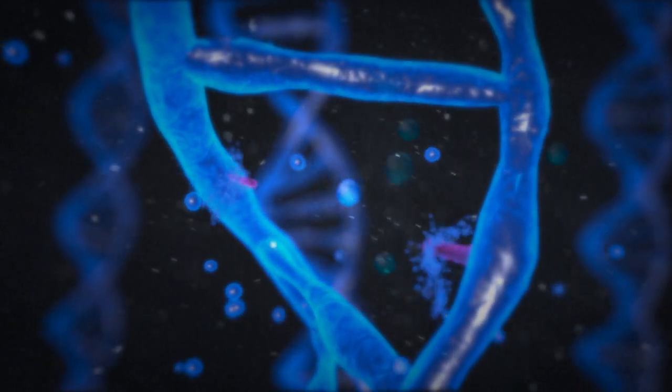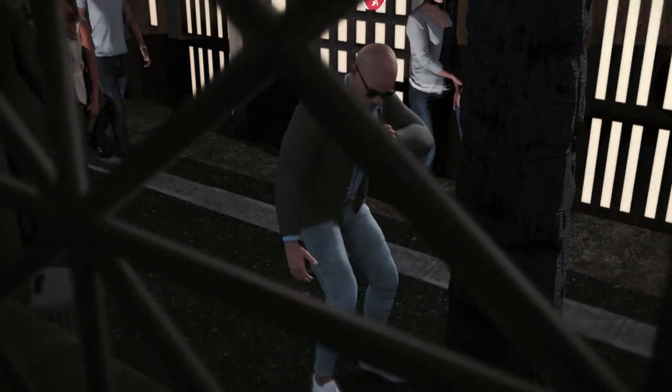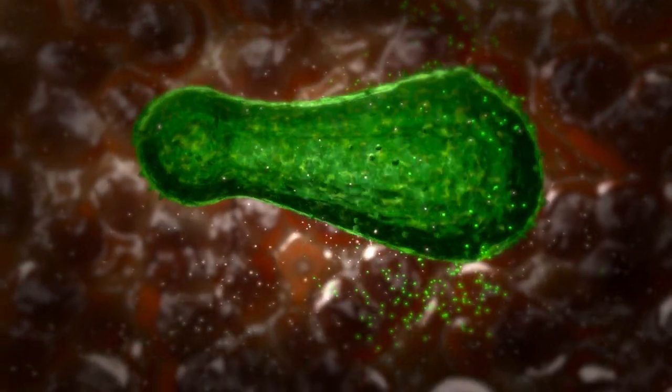Mutation occurs when the virus replicates while inside a host, such as a human body. During replication, the genome is copied. Sometimes there's a mistake in this copying process.